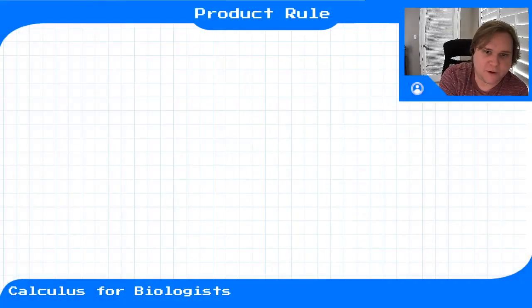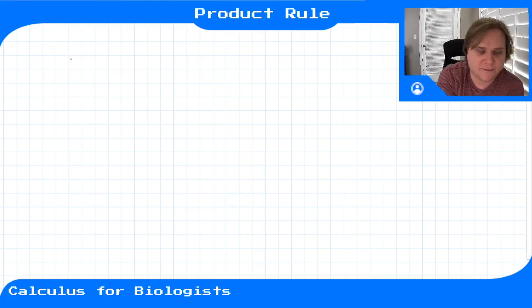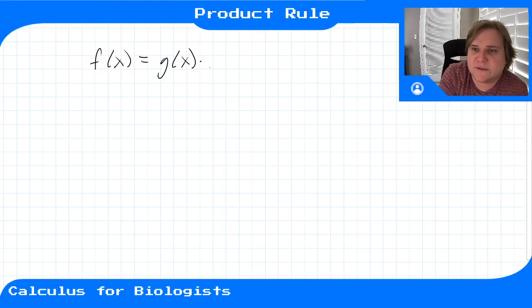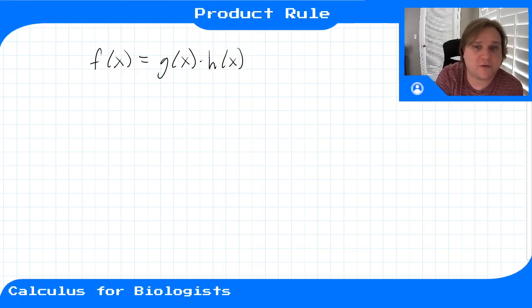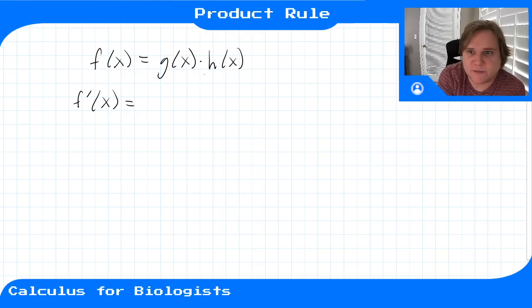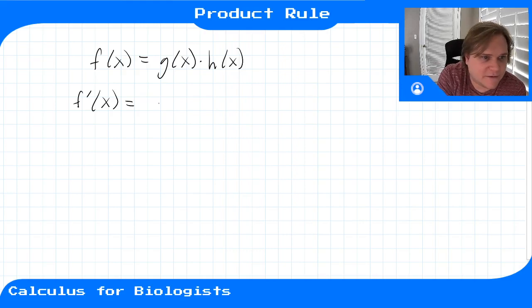Another important rule for calculating derivatives is the product rule. Let's say you had a function f of x equals g of x times h of x, and you want to know what the derivative of this function is. So unlike the sum rule, the product is not just going to be the product of the derivatives. It's going to be something different.